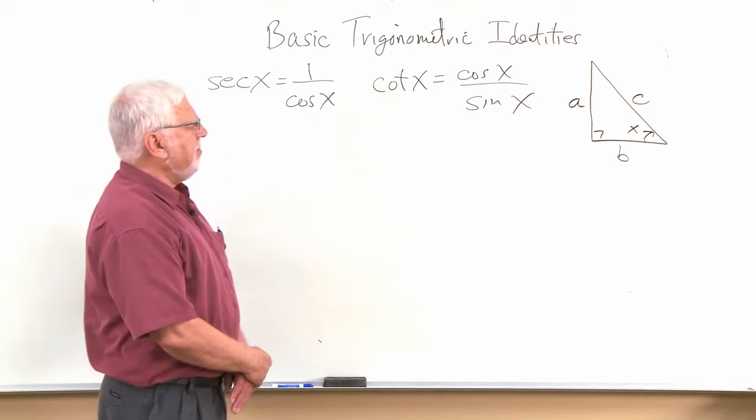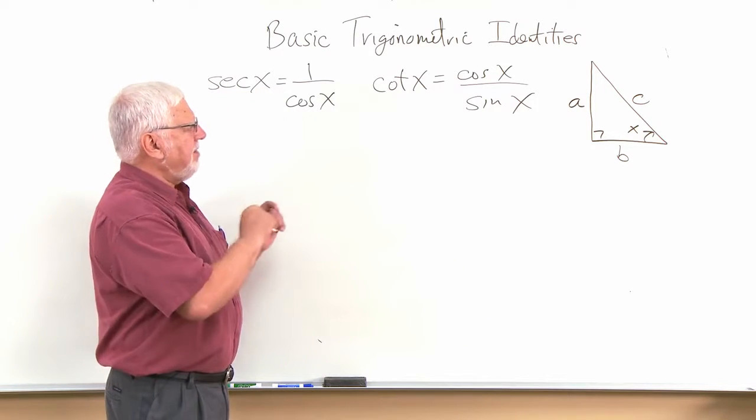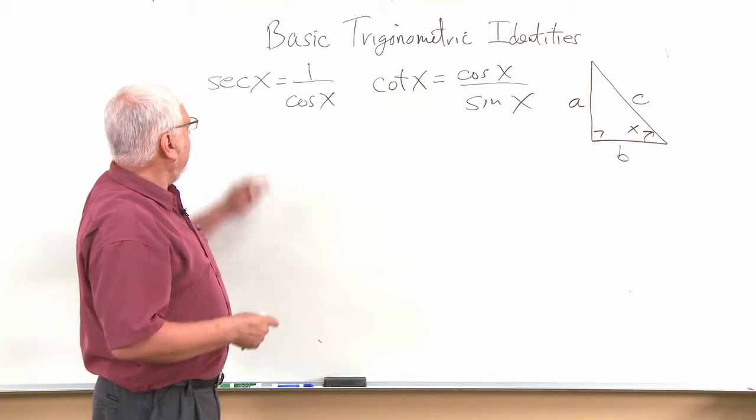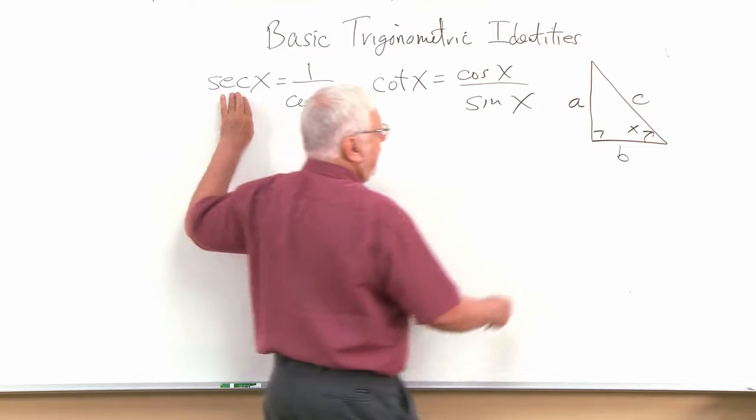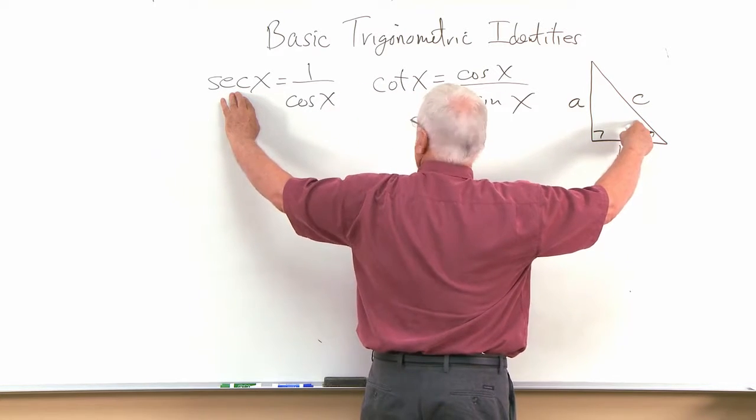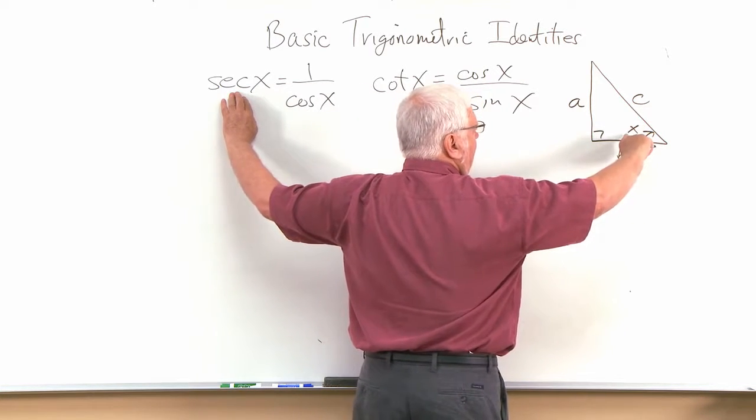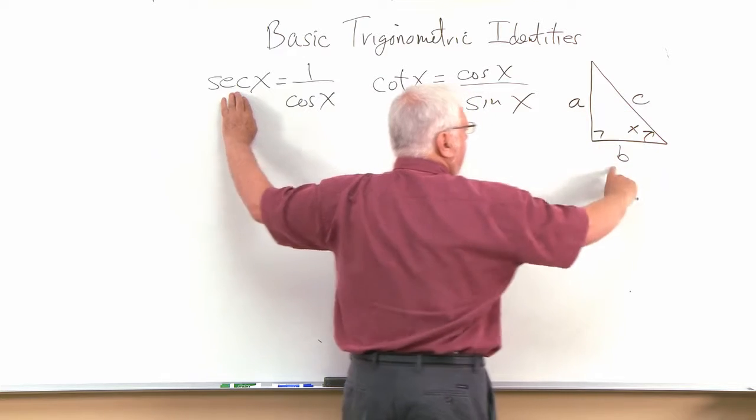But now think about how these are defined by the definition in terms of a, b, and c. Well the secant of x, the secant is the reciprocal of the cosine. So we've got to think it's going to be c over b.